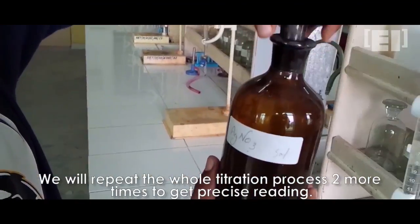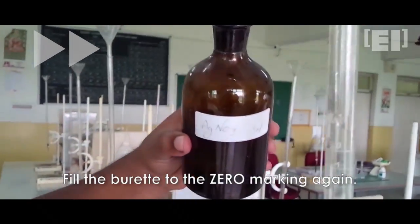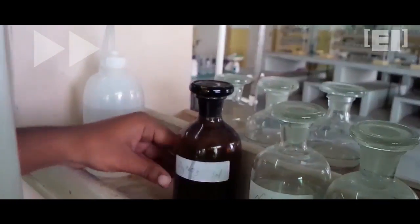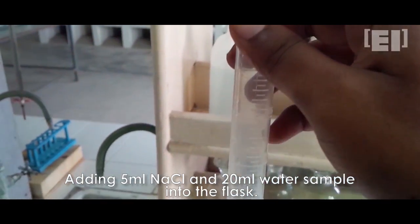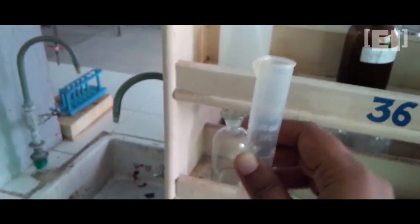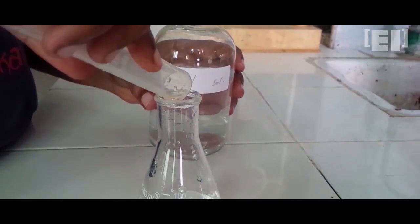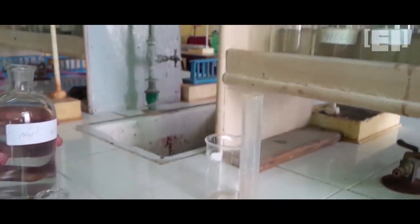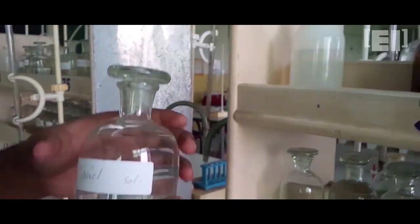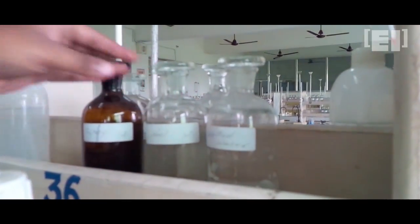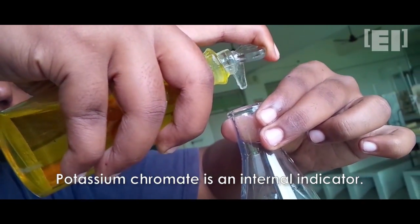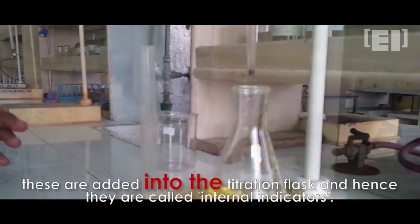Repeat the process two more times to get a precise value. Fill up the burette again and mix 5 ml of NaCl in 20 ml water sample. Pour 2-4 drops of potassium chromate into the flask and titrate it again with the AgNO3 solution.